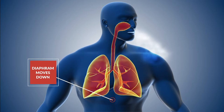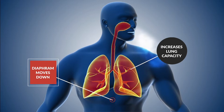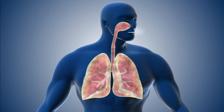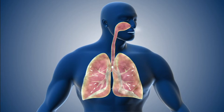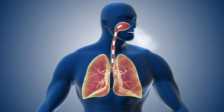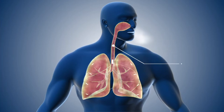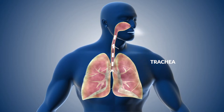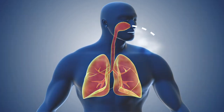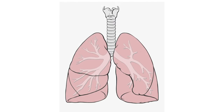As the diaphragm contracts, it moves down and allows more space in the chest cavity. This increases the lungs' capacity to expand. As the chest cavity volume increases, the pressure inside goes down and air is sucked in through the nose or mouth, through your trachea and into the bronchi, which split at the trachea base with one entering each lung.